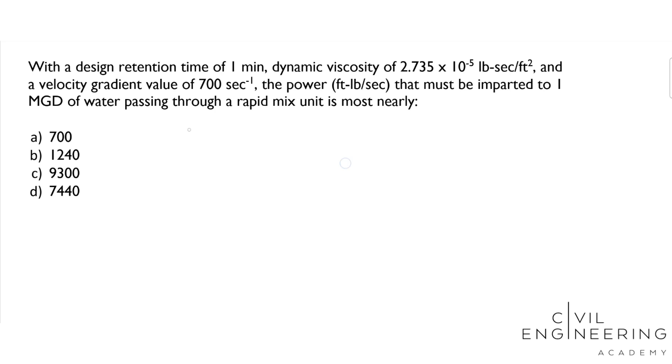First thing, we're going to turn to the PE reference handbook, section 6.9.2, and specifically 6.9.2.2 about mixing, and it has the equation for a rapid mix and flocculator design. That equation is G equals the square root of P over mu V.